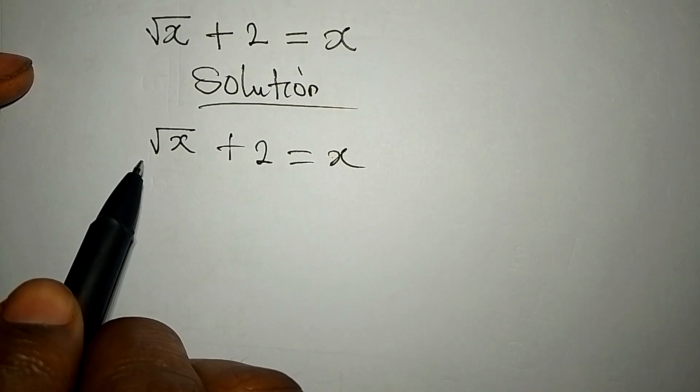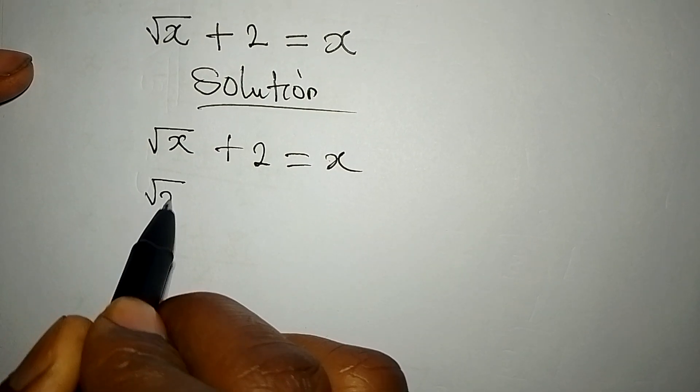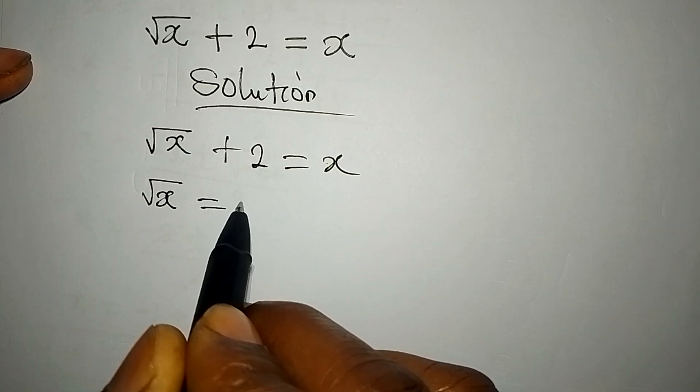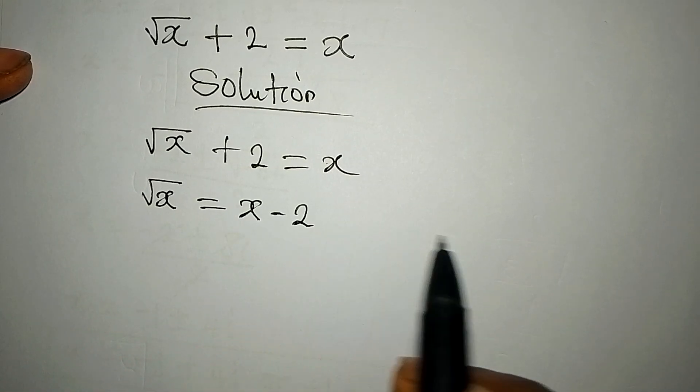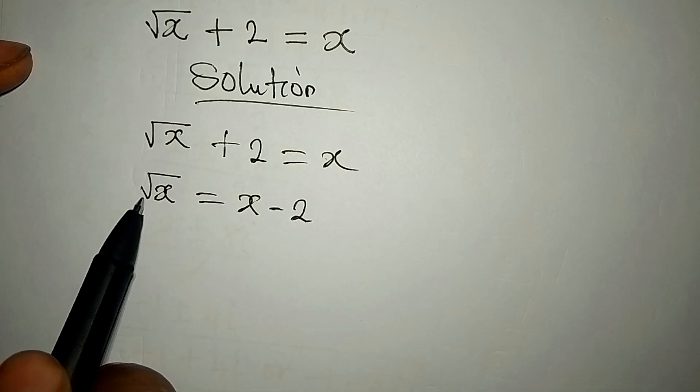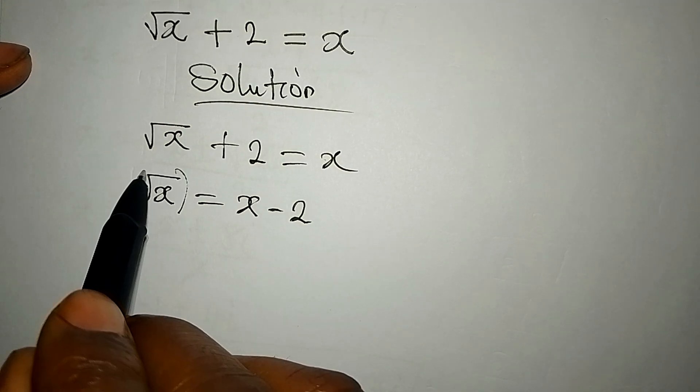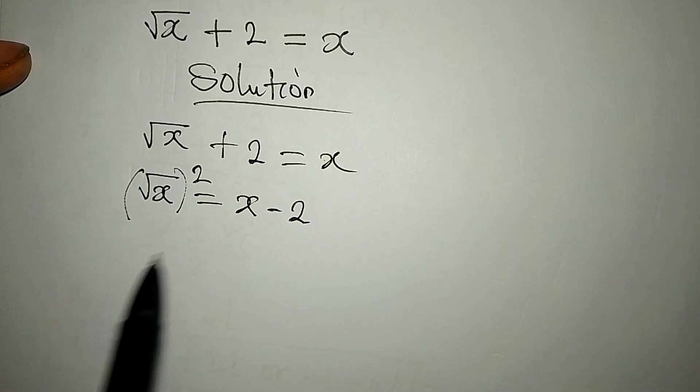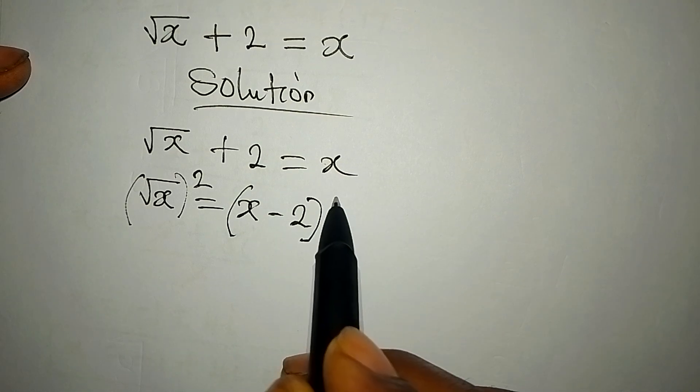Let's make square root of x the subject. So we have square root of x to be equal to x minus 2. Now remove the square root as we square both sides. Then put these two together and you square.